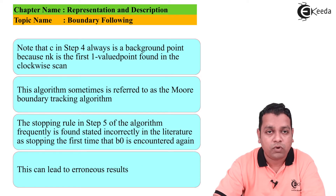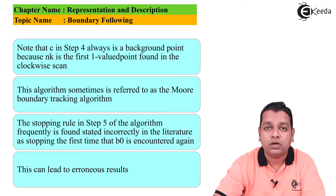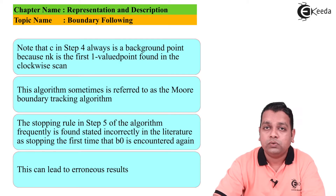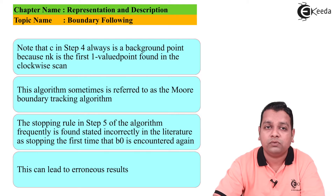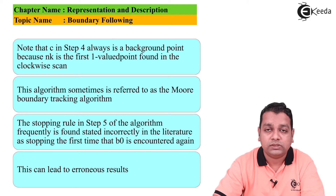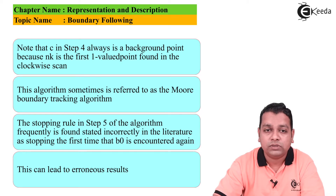Note that c in step 4 is always a background point because nₖ is the first one-valued point found in the clockwise scanning direction. This algorithm is sometimes also referred to as the Moore boundary tracking algorithm. The stopping rule in step 5 is frequently stated incorrectly in the literature as stopping the first time b₀ is encountered again, which can lead to erroneous results.